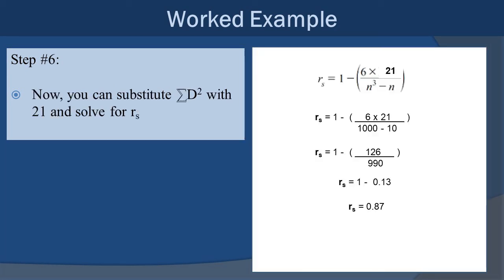Step 6, now we can substitute the sum of D squared with 21 and solve for the Spearman's coefficient. So I drop that 21 in there. I also can drop 10 in there for n, because we know that that is the pairs. So 10 cubed becomes 1,000 minus 10, so you get 990 there on the bottom. And then, of course, 6 times 21, you got 126. You divide that, and you end up getting 0.13. Now you're subtracting 1 minus 0.13, the way the equation's set up. That gives you a final coefficient of 0.87. So that is what we've solved.